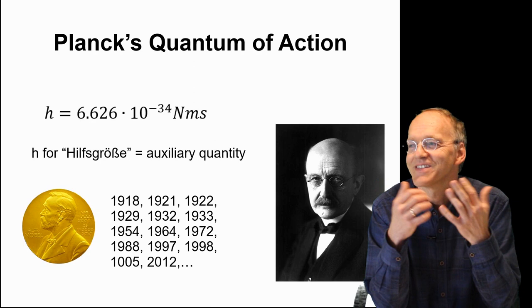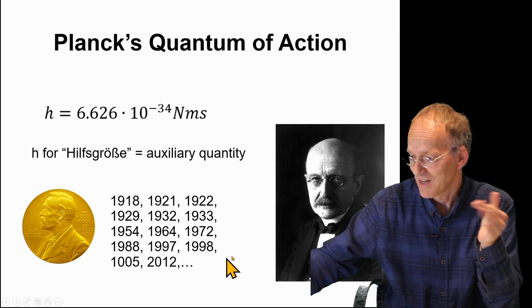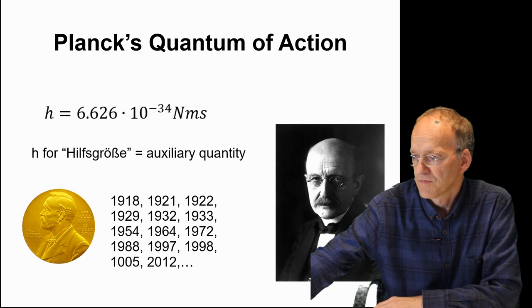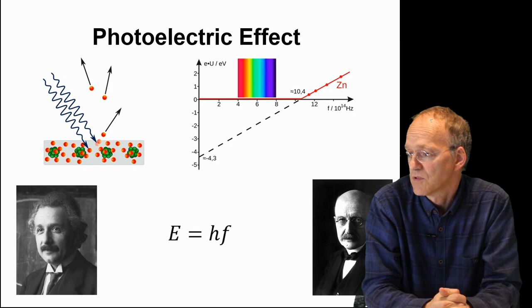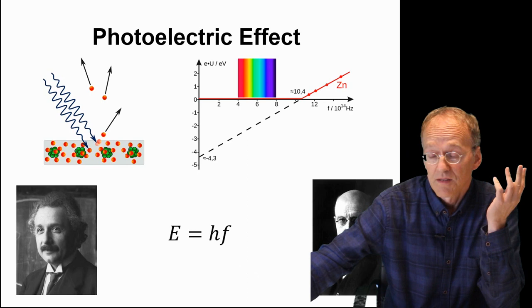He did not immediately recognize the significance of his discovery, but if you look at Nobel Prizes, all these would be unthinkable without the quantum of action. Who actually recognized for the first time the importance of Planck's constant was Albert Einstein with his interpretation of the photoelectric effect. He said that light would contain energy in quanta of the amount h times f, the frequency.